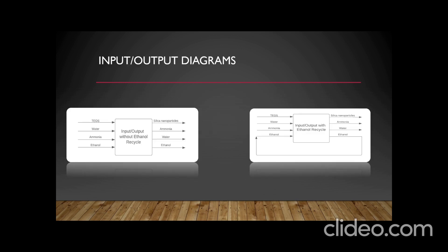The input-output diagram on the left is the Stober process without the recycle stream. The inputs of TEOS, ammonia, water, and ethanol are shown. The products are silica nanoparticles, ammonia, water, and ethanol. As seen in the process flow diagram, the silica nanoparticles will be completely separated from the ethanol, ammonia, and water waste stream. An assumption made in this process is that all the TEOS is used up in the reaction.